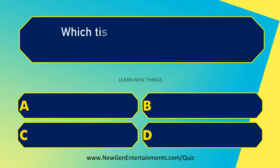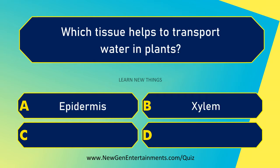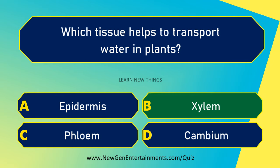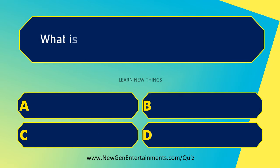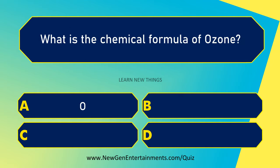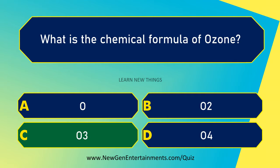Which tissue helps to transport water in plants? Xylem. What is the chemical formula of ozone? O3.